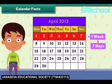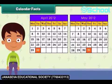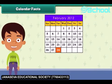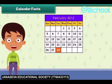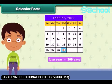Each month has 30 or 31 days. Only February has 28 days. In a leap year, one extra day is added in the month of February, and therefore a leap year has 366 days.